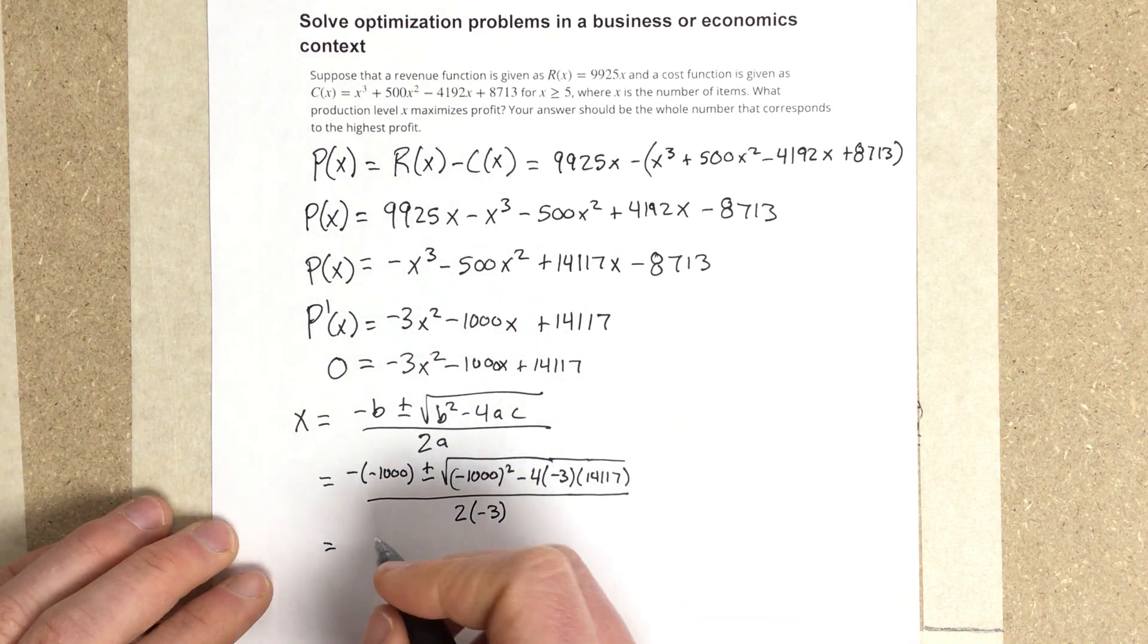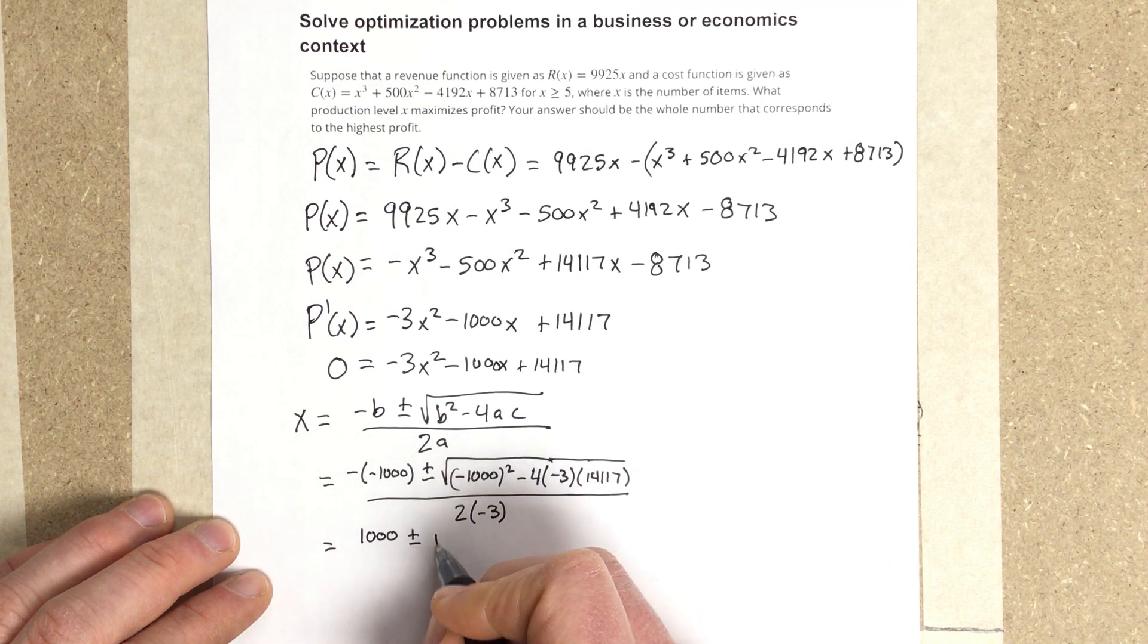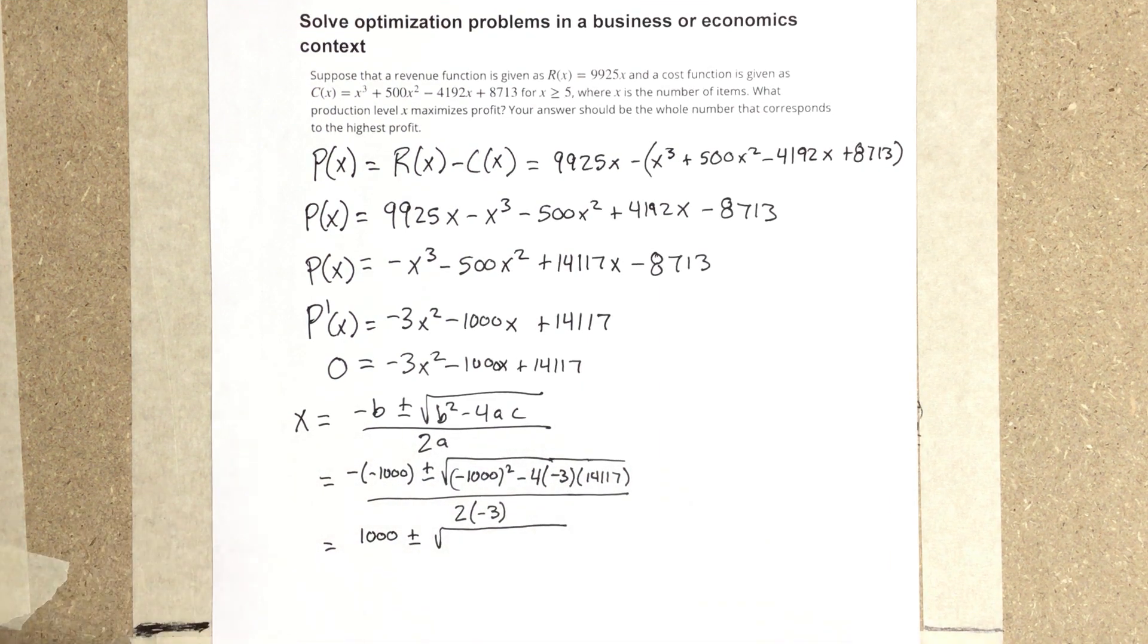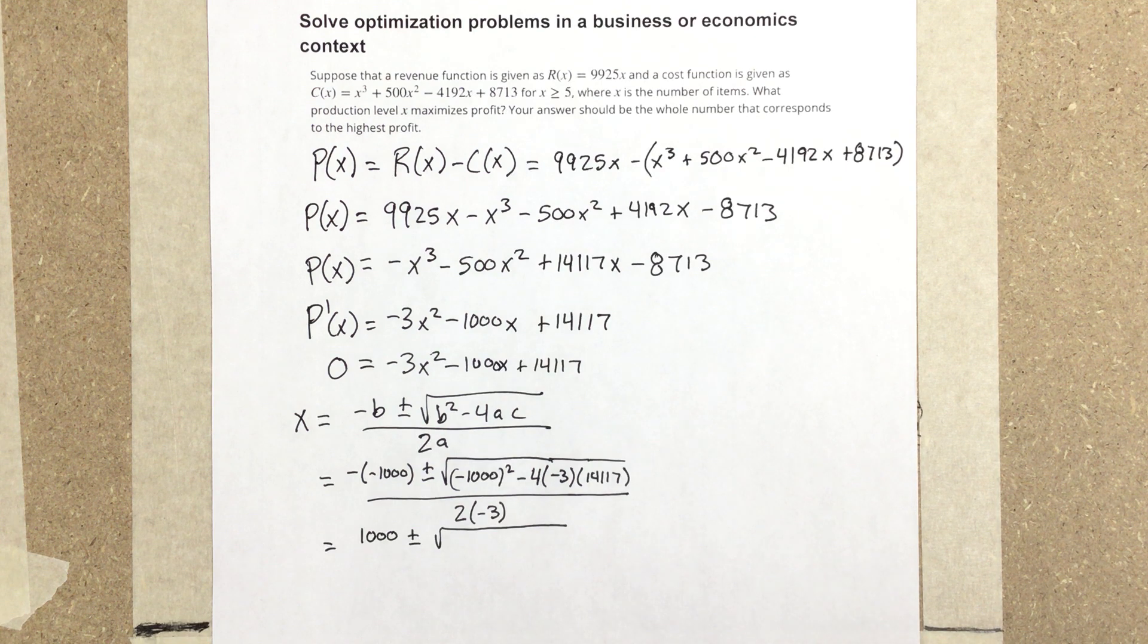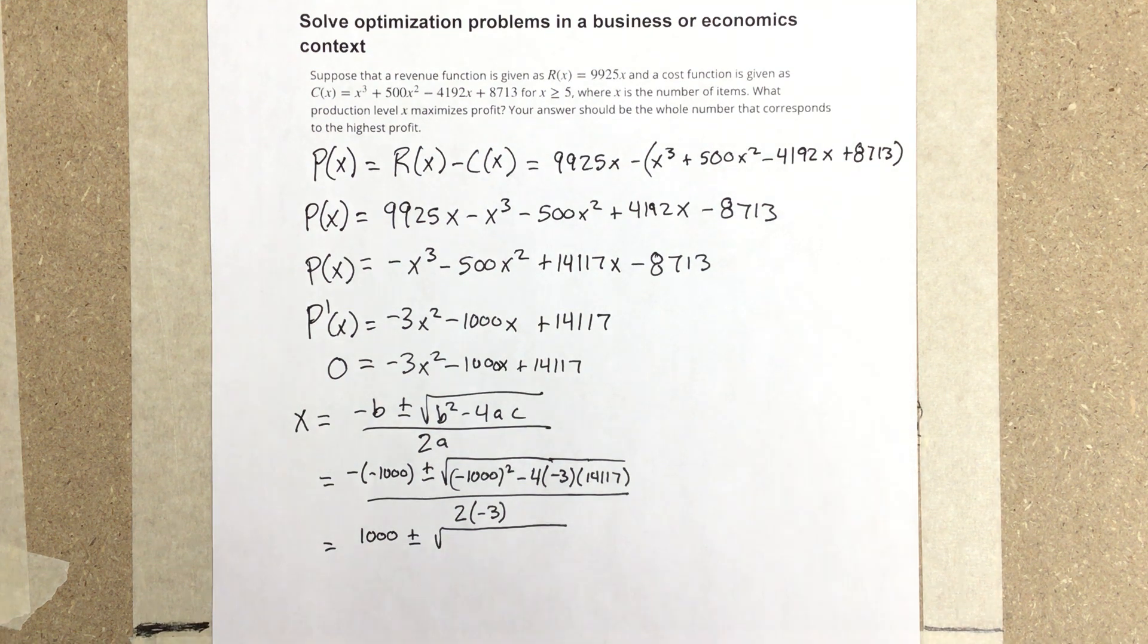So we end up with 1,000 ± root. Let's plug that in the calculator. 1,000² plus 4 times 3 times 14,117. We had two negatives there, that's why I said plus. Then do the square root.